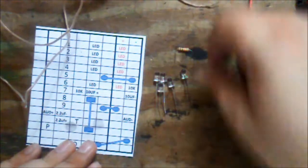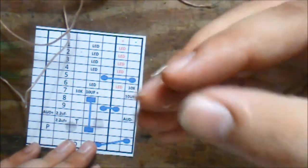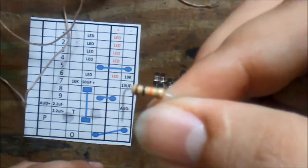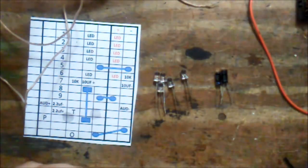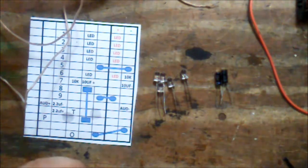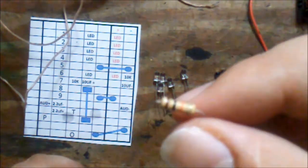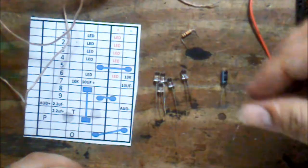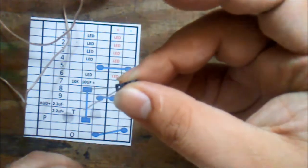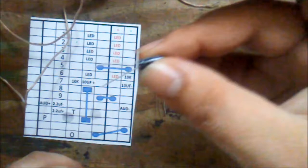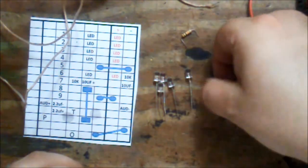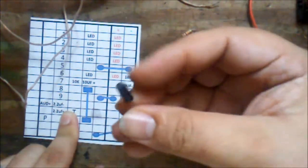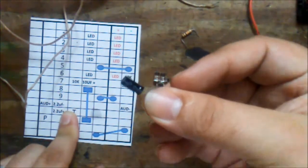Then you need your 10K resistor, which has the color code brown, black, orange. I get a lot of 10Ks because I use a lot of them. The next one is going to be a 10 microfarad electrolytic capacitor. Then the next one is going to be a 2.2 microfarad capacitor.